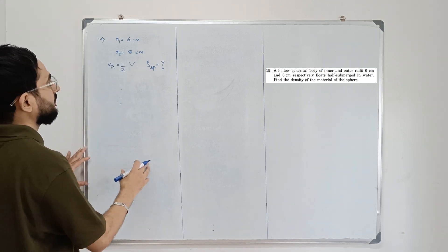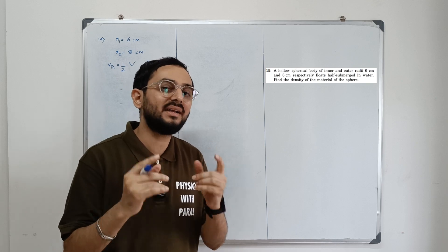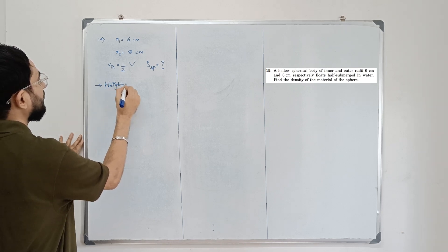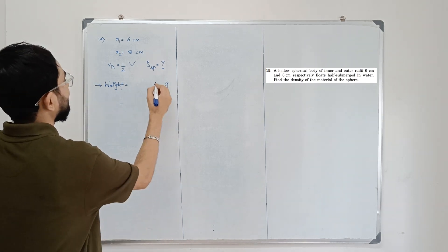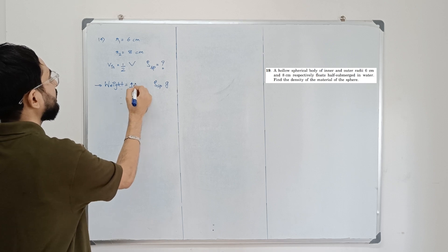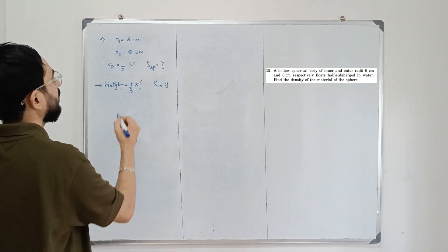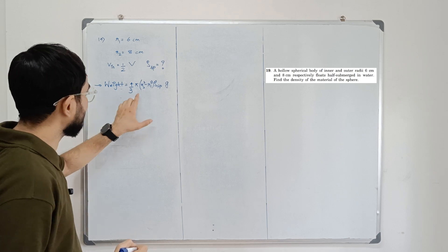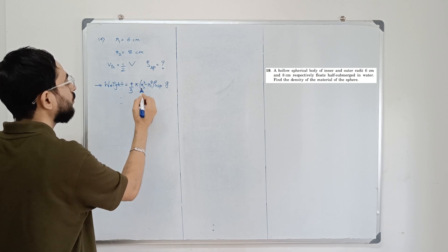Since the sphere is floating on the surface of water, its weight equals the upthrust provided by water. Let's calculate weight first. Weight is mg — mass into acceleration due to gravity. Mass equals density of the sphere multiplied by volume of the sphere. For a hollow sphere, that volume is (4/3)π(r2³ − r1³). So weight = density × (4/3)π(r2³ − r1³) × g. Let's call this equation number one.